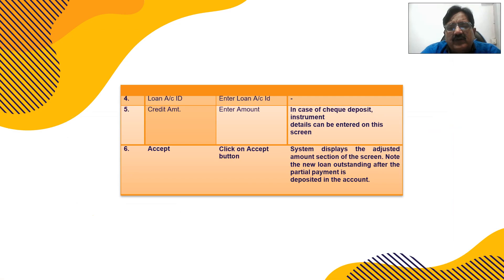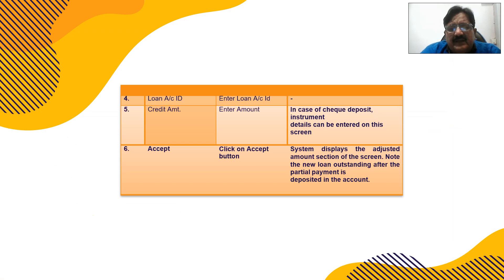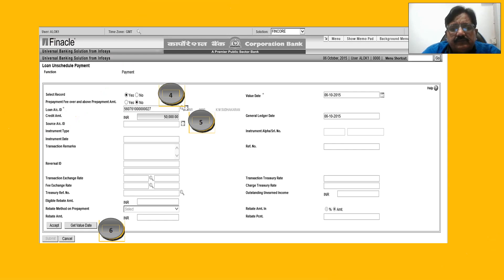Enter the credit amount — for example 50,000 or 1 lakh, whatever the amount is — and accept. The system then displays the adjusted amount section of the screen. Note the new loan outstanding after the partial payment is deposited in the account.